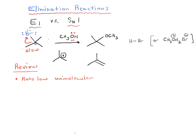It only depends on the concentration of substrate and that's where the 1 in the E1 and the SN1 comes from - it's unimolecular. And consequently they both go through formation of a carbocation.